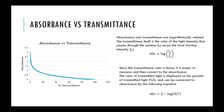Absorbance and transmittance are not linearly related. While transmittance is the amount of light that passes through to the other side, absorbance is the amount of light that's blocked — it's not a direct linear relationship. They are logarithmically related to each other. As transmittance decreases and absorbance increases, it's increasing by a greater amount at low percent transmittance.